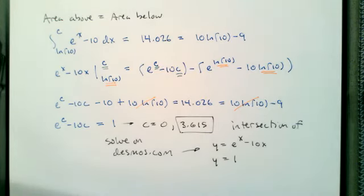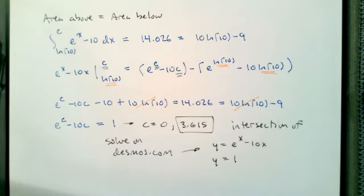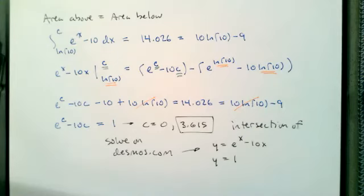Notice what these problems had in common: it was about recognizing that definite integrals tell us area, and then recognizing that area below the x-axis is negative and area above the x-axis is positive. The next problem on the homework is very similar — it's a question about average value.